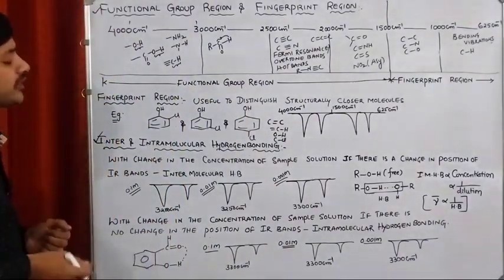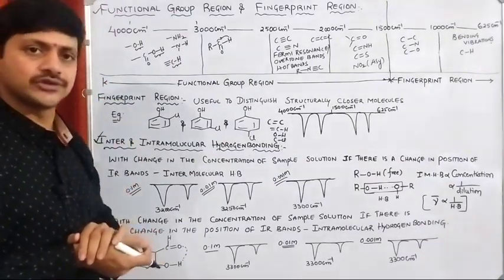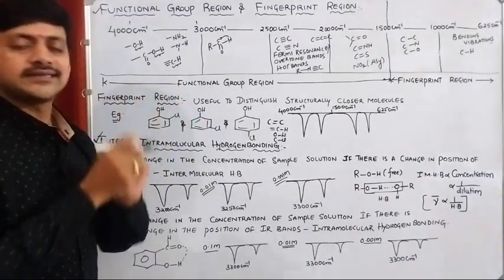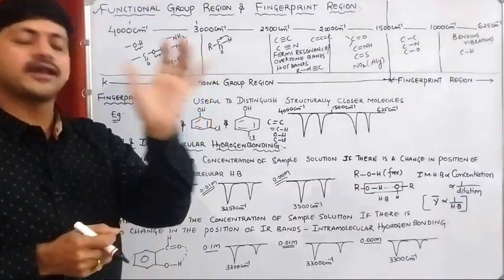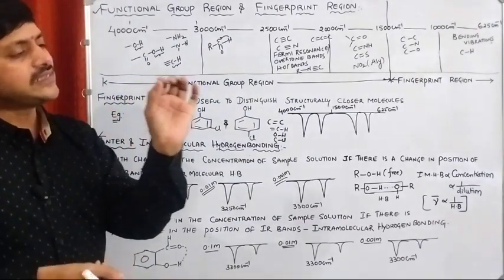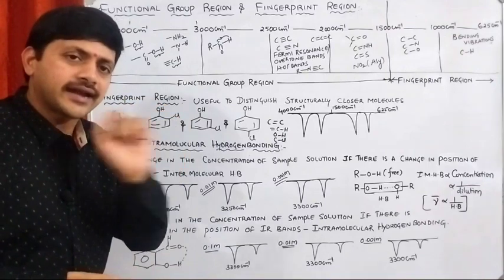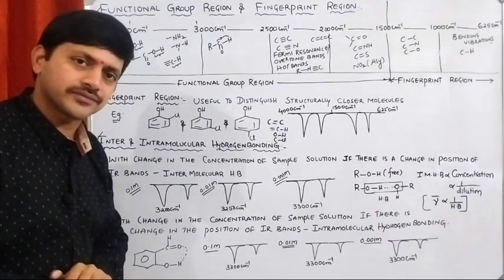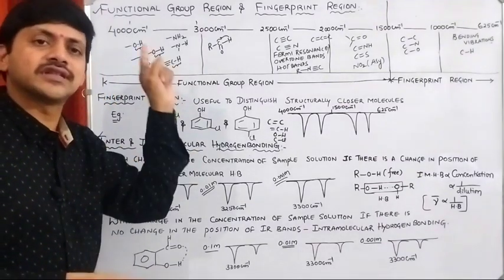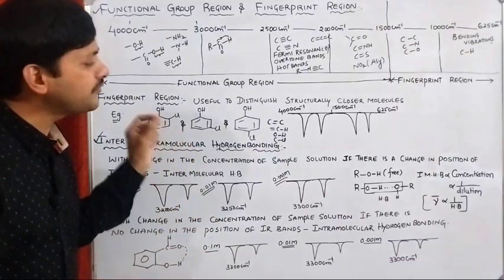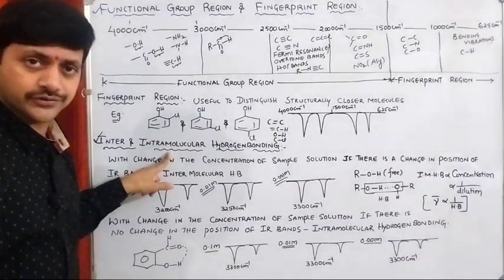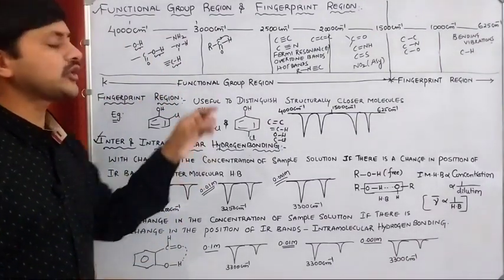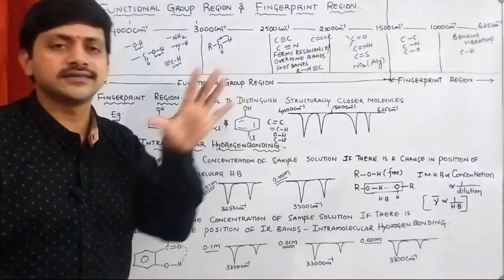Here is one important concept related to IR spectra interpretation. Suppose we have a sample with a particular IR spectrum — can we identify whether intermolecular or intramolecular hydrogen bonds are present in the sample? Yes, we can identify this using IR spectra. It is a very important application of IR spectroscopy — it is useful to distinguish inter and intramolecular hydrogen bonds present in a sample.